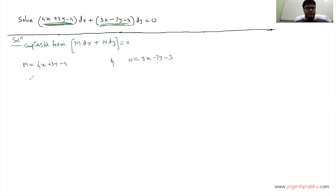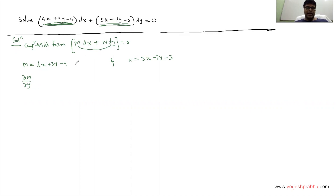The next thing you do is differentiate M partially with respect to y, and differentiate N partially with respect to x. Remember, M is with dx but you differentiate it with respect to y. When differentiating M with respect to y, treat y as the variable and x as a constant.